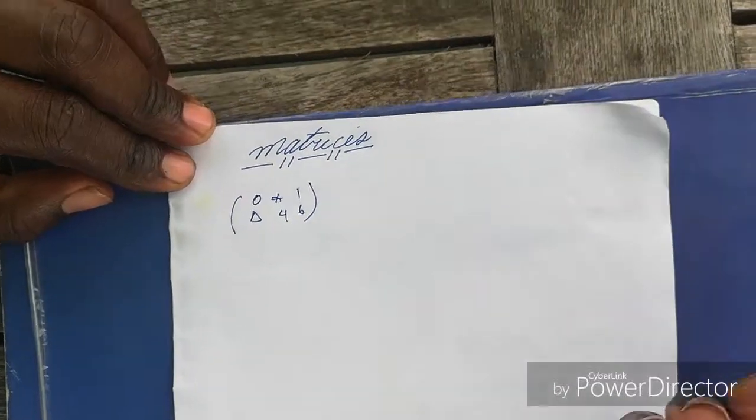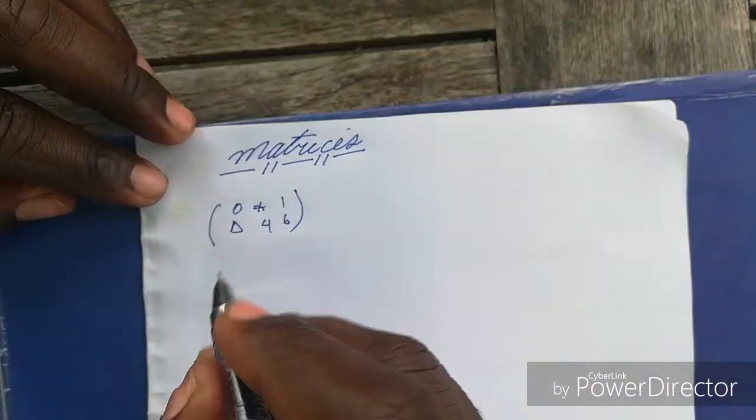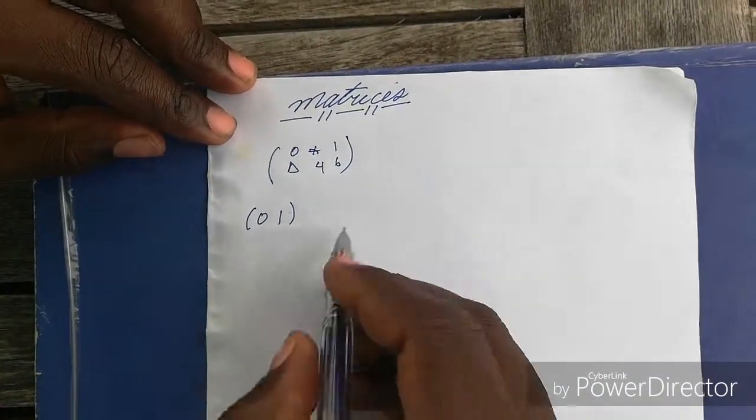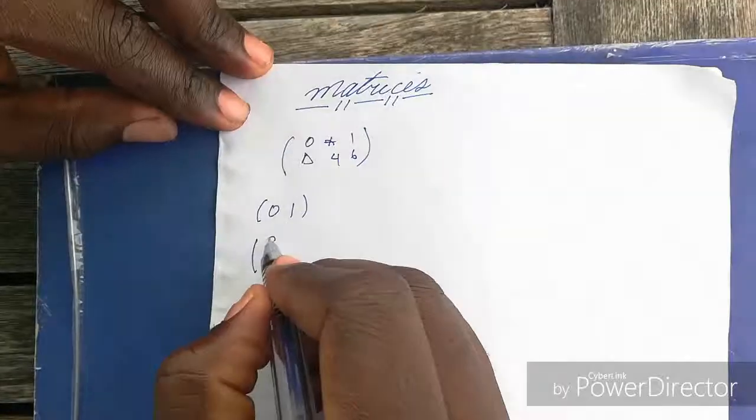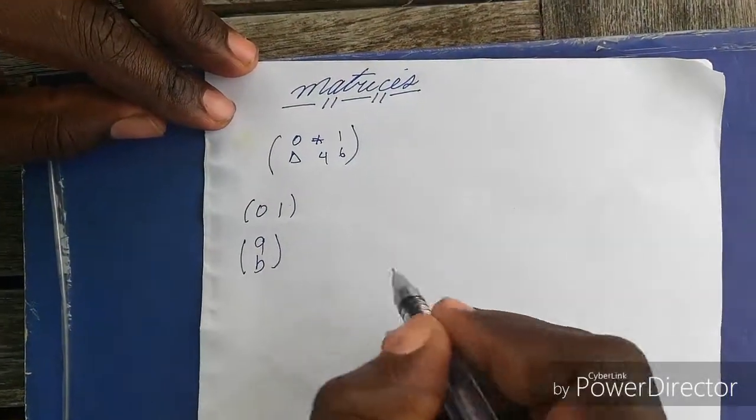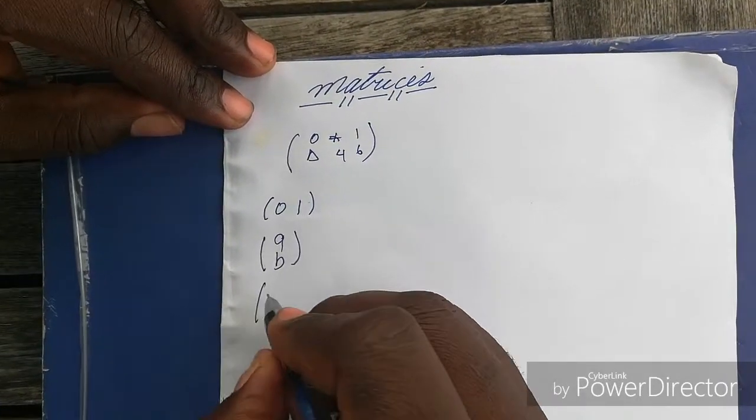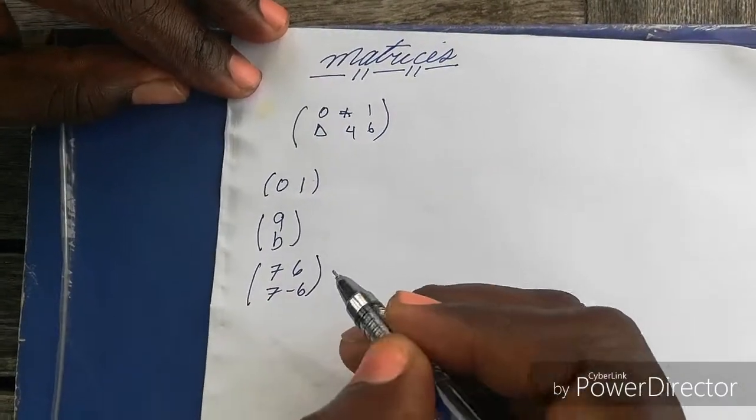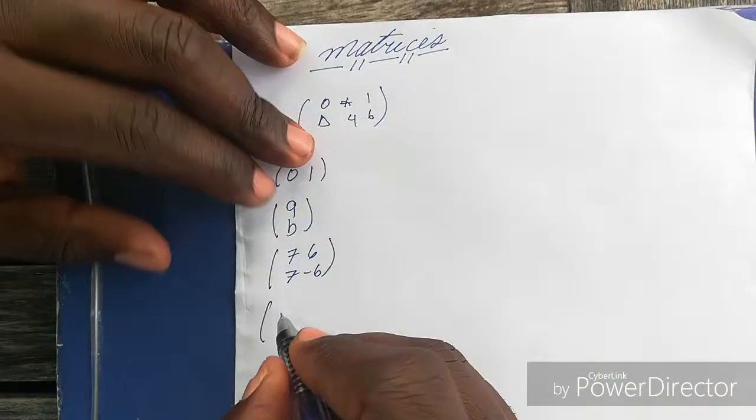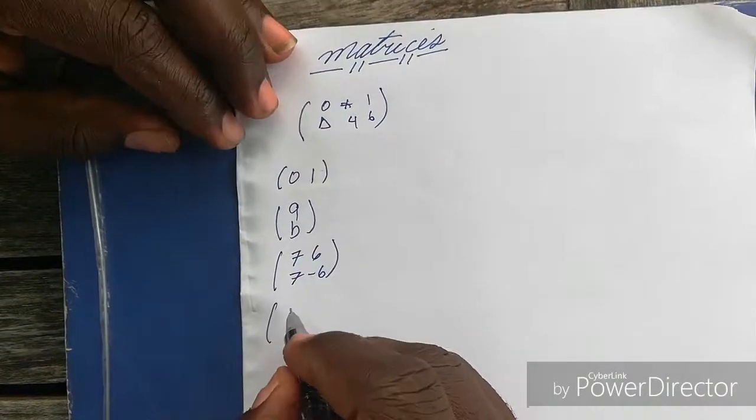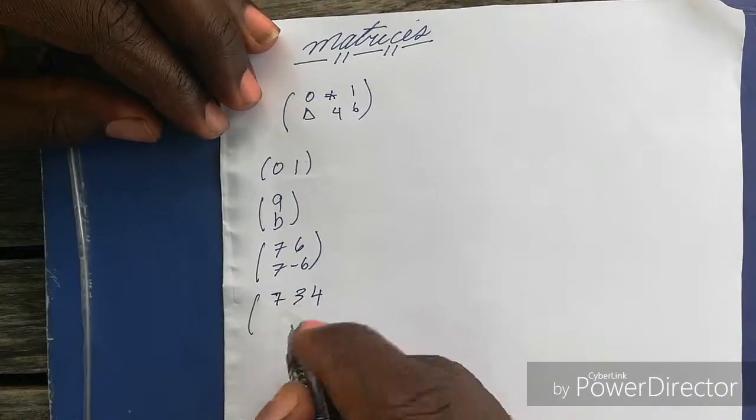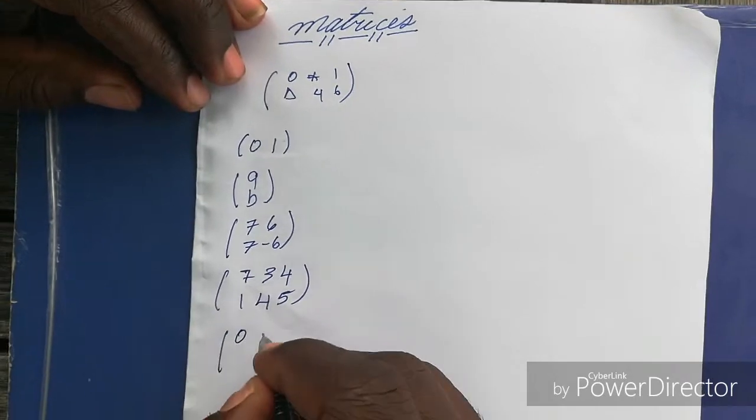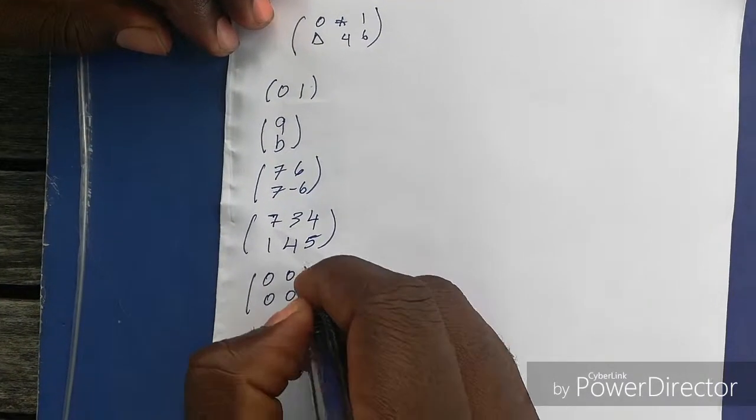There are different types of matrices. Let's start with the basics: we have row matrix, that's just a matrix that's comprised of a single row. We have a column matrix, which is comprised of one column. We have square matrix, that's a matrix that has equal amount of rows and columns. We have rectangular matrix, this is a matrix that has either more rows than columns or more columns than rows. We have the zero matrix, a zero matrix is just a matrix where all the elements are zero.